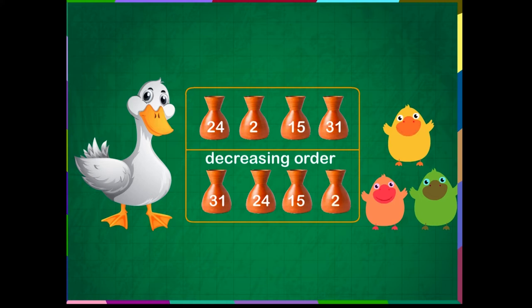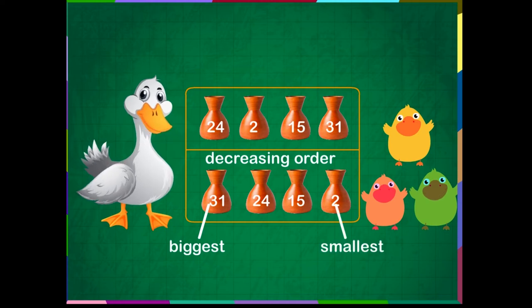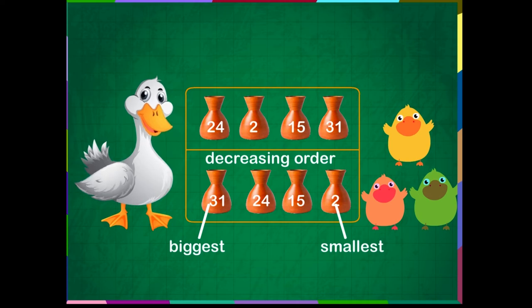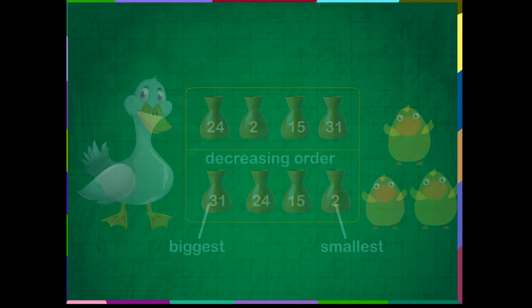Here, the number 31 is the biggest, which is written at first, and the number 2 is the smallest. Correct! So, remember, decreasing order means arranging anything from largest to smallest.